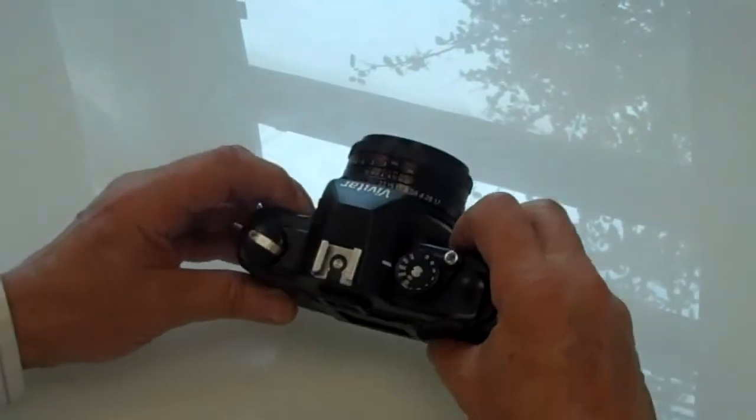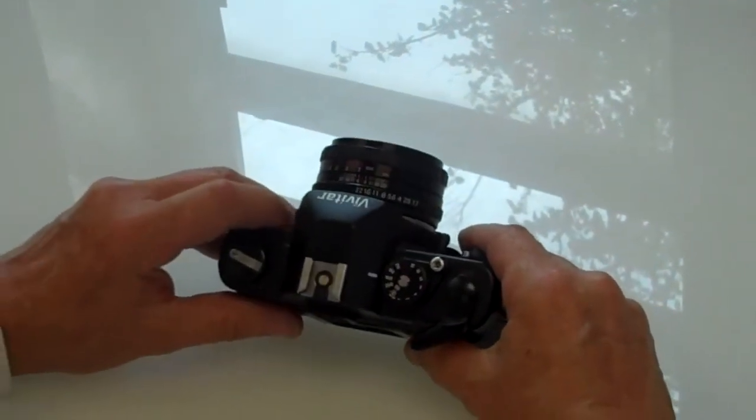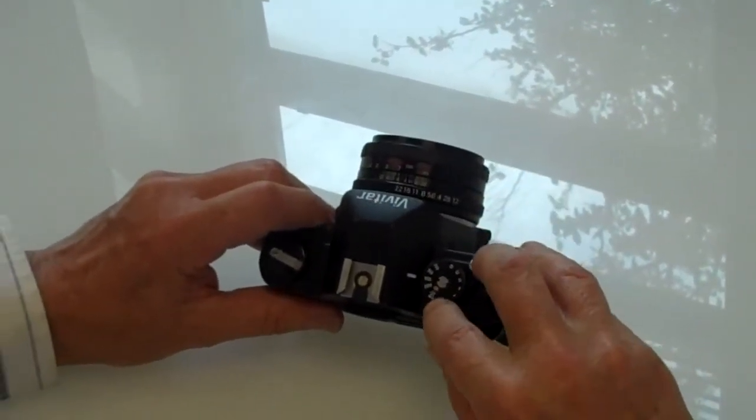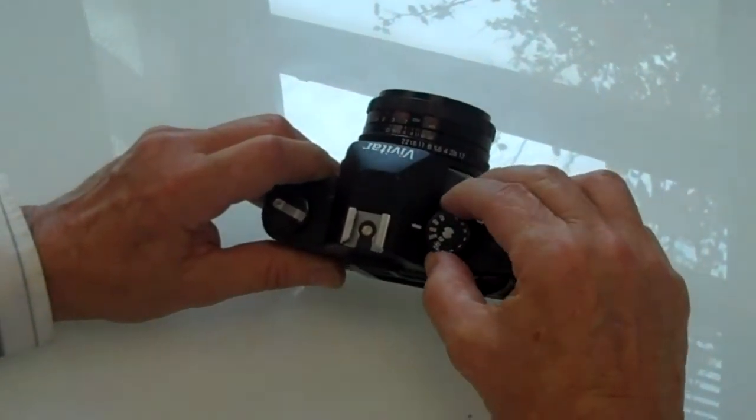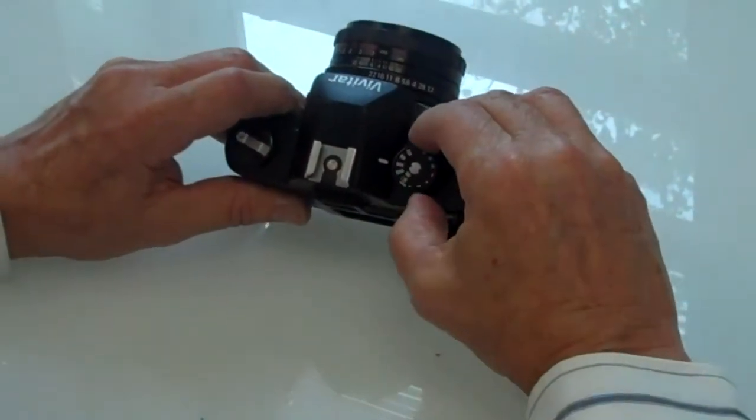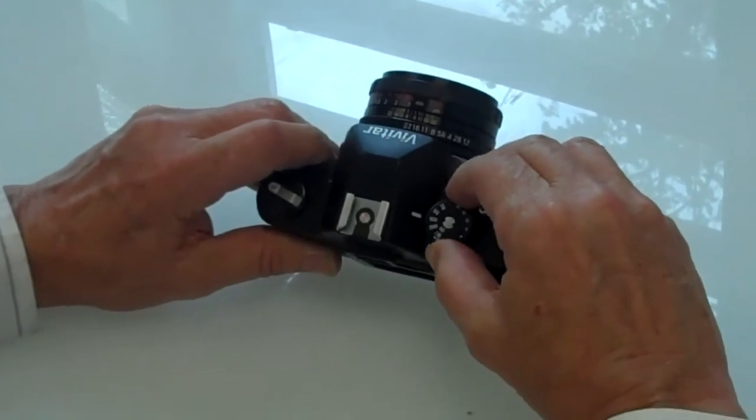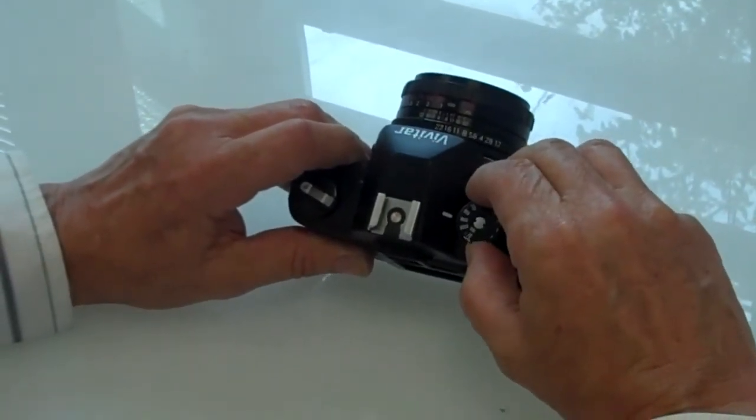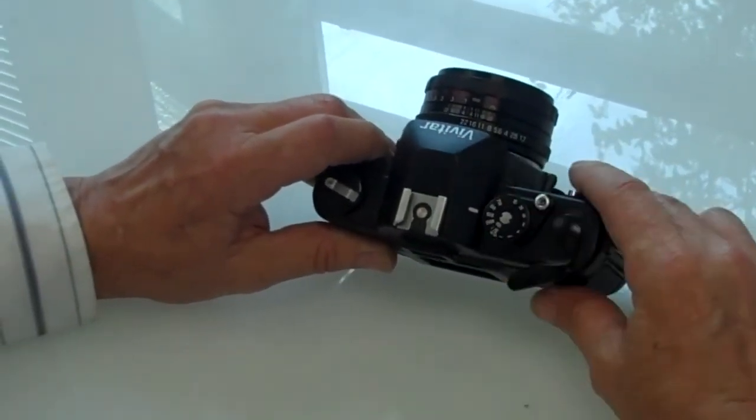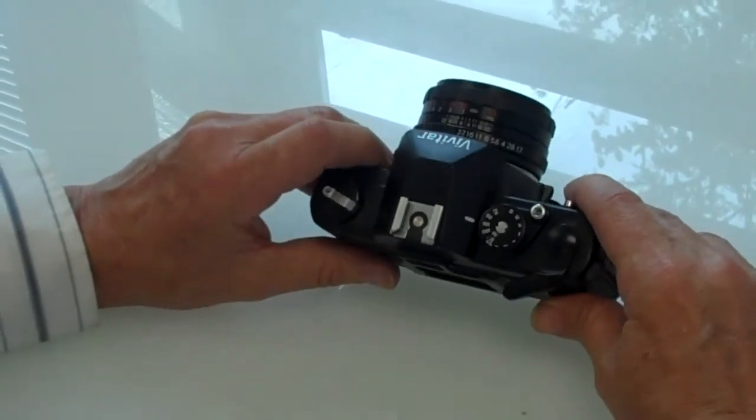But make sure several things. One, there's a little window right here. When you lift this ring up, you can change the ASA, remember we talked about film speed. So you want your film speed at 400, that's the kind of film you have in here.